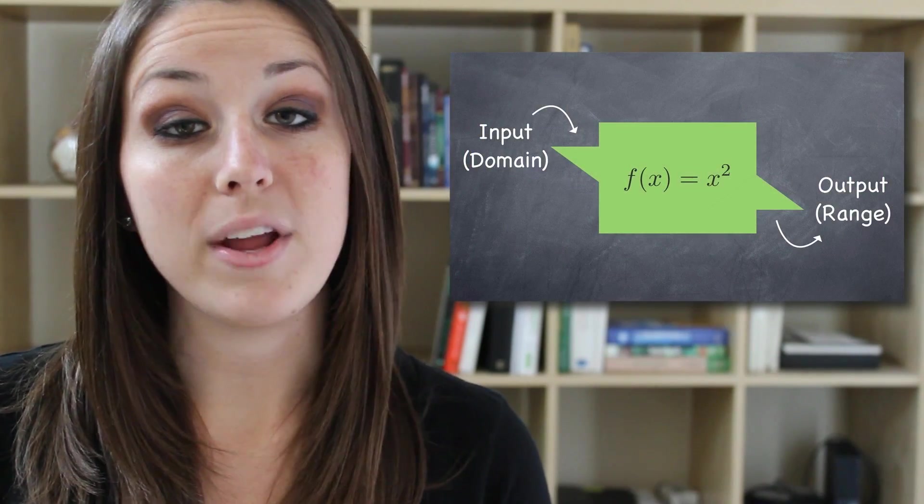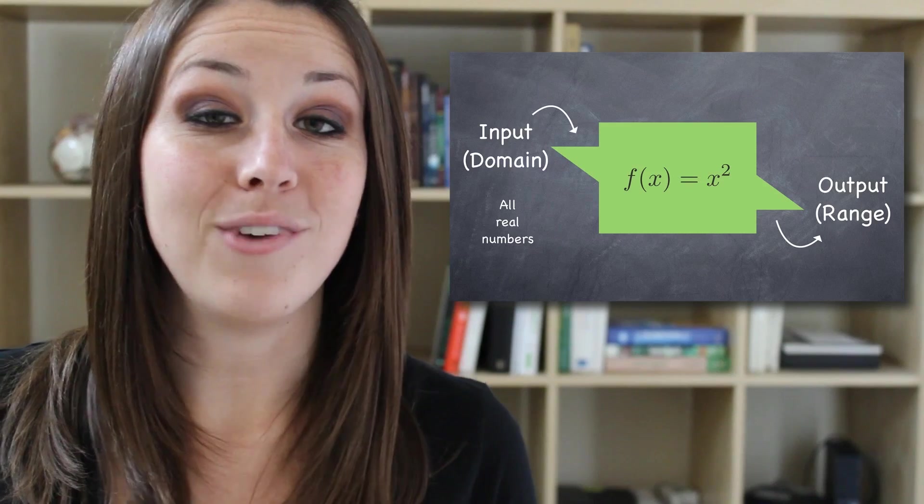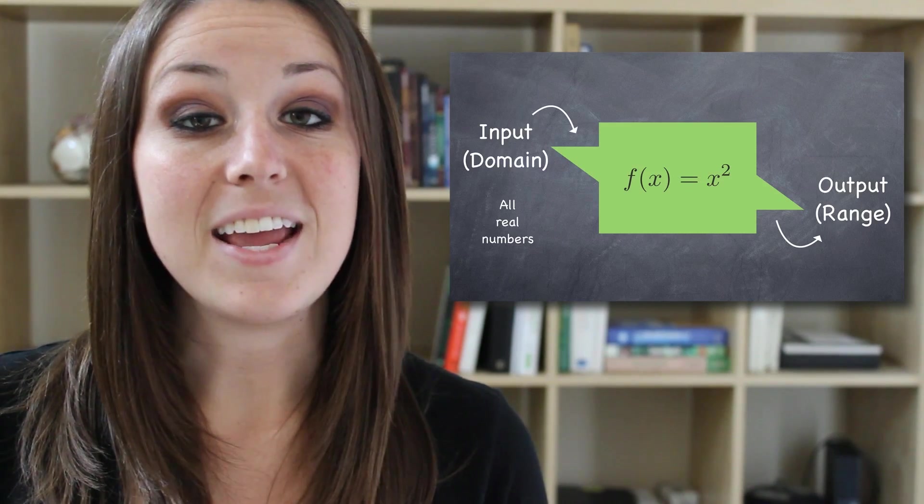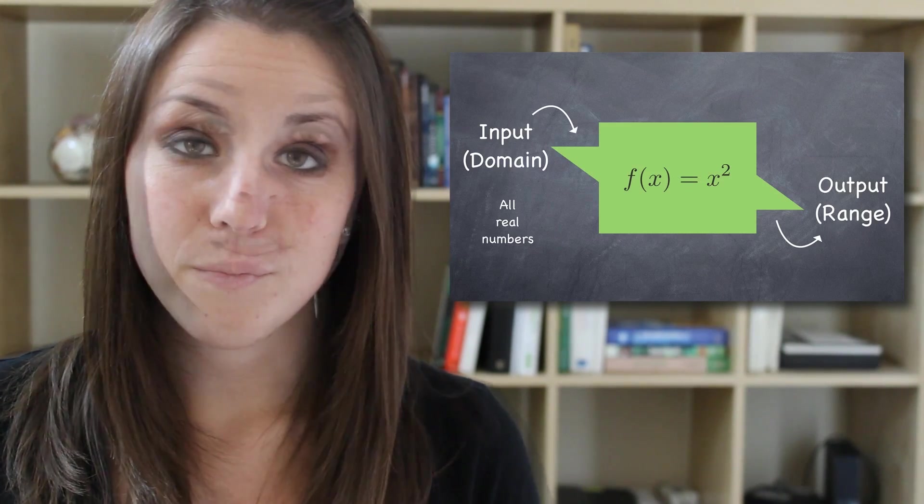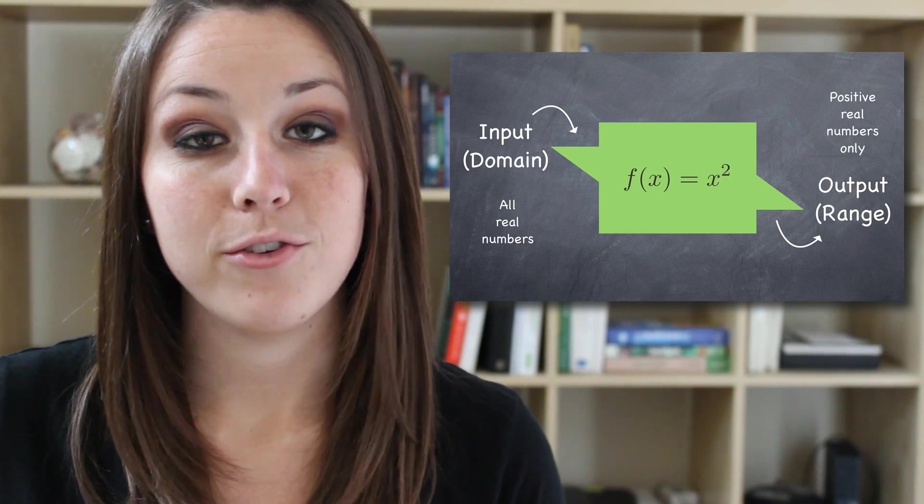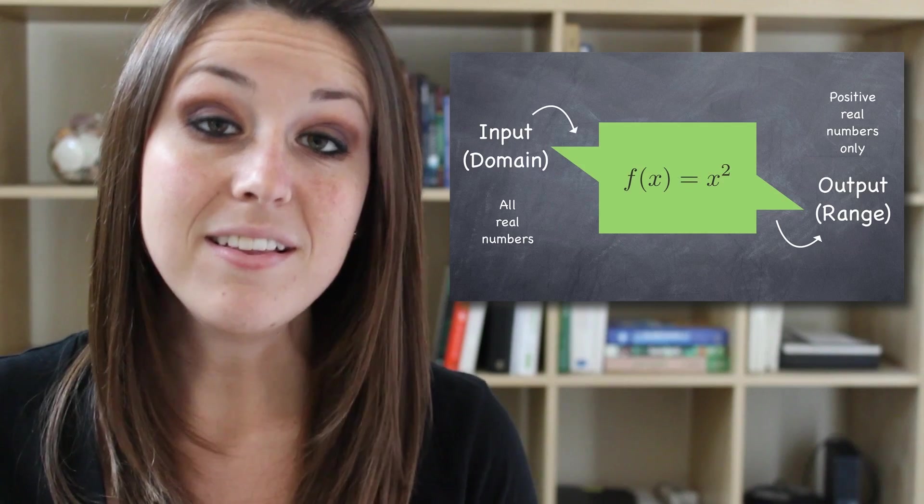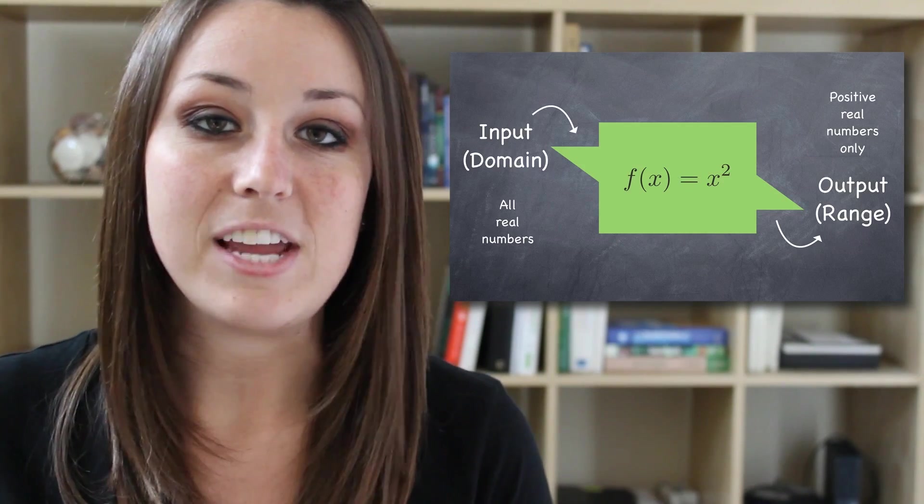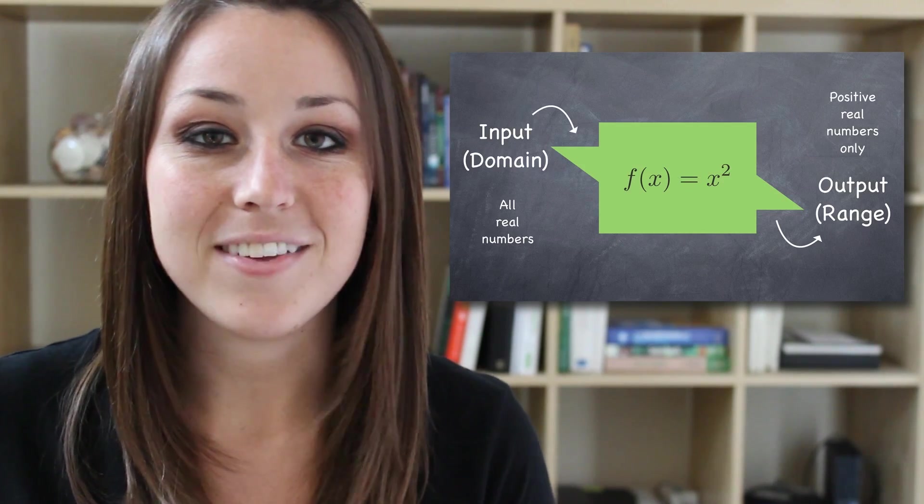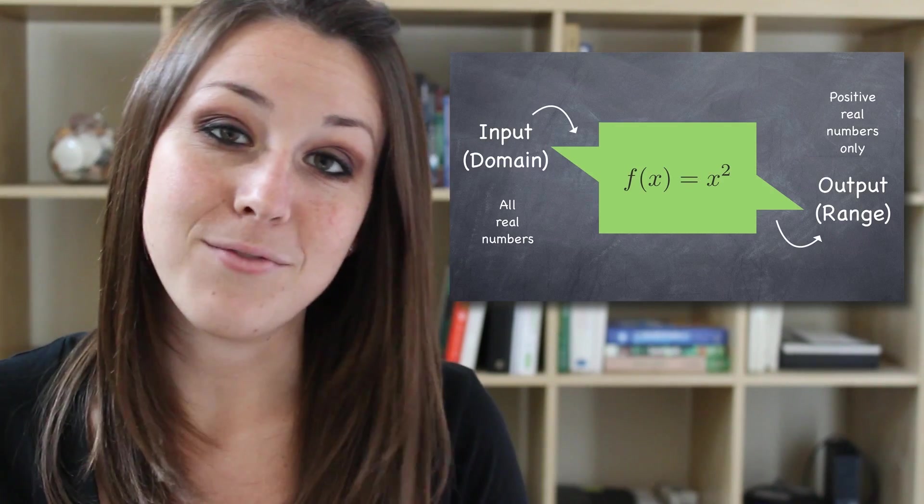The range of a function is completely dependent on the domain because the range is made up of all the values that you can get out of your function machine as a result of inputting all the values in the domain. For example, if your function is x squared, you can input any value you want without breaking the laws of mathematics, so the domain is the set of all real numbers. The range of the function, however, is only positive real numbers. Regardless of whether you input negative or positive values, because you're squaring each value, you can only get positive numbers out, and so the range is only positive real numbers.